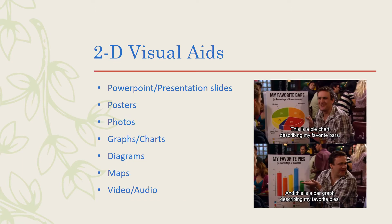Two-dimensional visual aids are what the book discusses next, and this is typically the more common type of visual aid that I see in the classroom. Two-dimensional visual aids offer significantly more options for students, which I think is why. Something falling into this category probably makes the most sense for an informative speech because it can be difficult to showcase a 3D object thoroughly in a classroom.